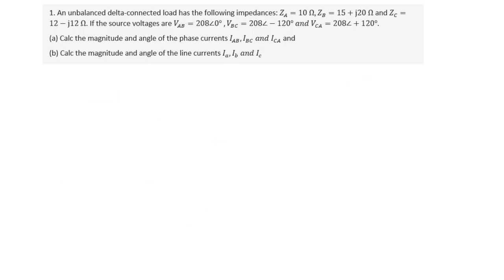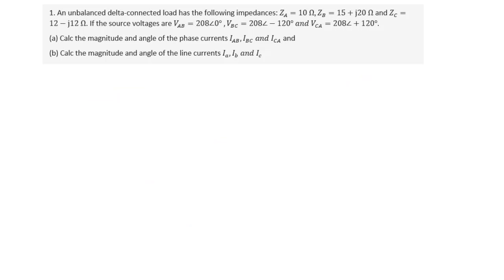Let's try an example. An unbalanced delta-connected load has the following impedances: Za equals 10 ohms, Zb equals 15 plus j20 ohms, and Zc equals 12 minus j12 ohms. The source voltages are Vab equals 208∠0°, Vbc equals 208∠−120°, and Vca equals 208∠+120°. We need to (a) calculate the magnitude and angle of the phase currents Iab, Ibc, and Ica, and (b) calculate the magnitude and angle of the line currents Ia, Ib, and Ic.